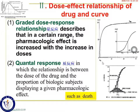Graded response means the body's response to the drug can be described by a specific number, and the change of effect may occur in a specific individual. For example, heart rate: if a drug is used at a relatively low dose, heart rate may increase slightly; at a relatively high dose, heart rate increases more obviously. That is graded response — like blood pressure or gland secretion.